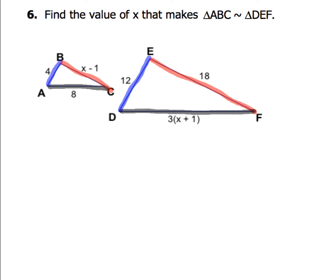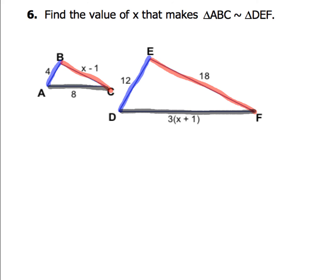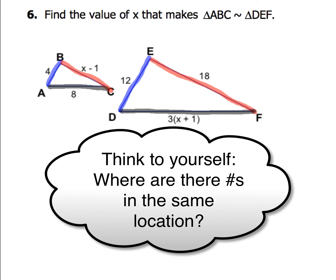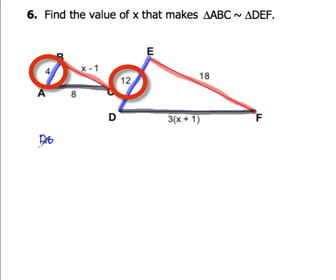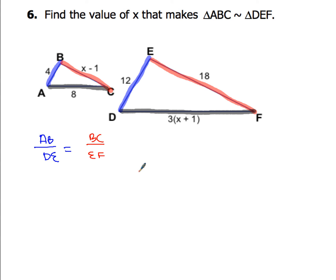For example 6, find the value of X that makes triangles ABC and DEF similar. Highlight corresponding sides to keep track of which numbers and expressions you'll be working with. Analyze where there are known numbers in the same position in both triangles — use sides AB and DE. We'll set up a proportion AB/DE = BC/EF, and we're going to need to do this twice.